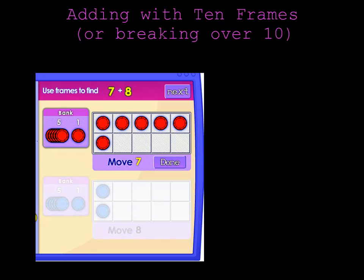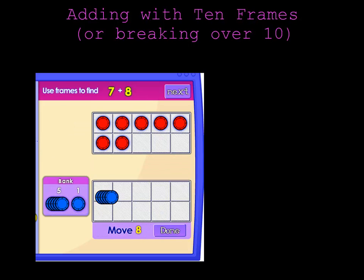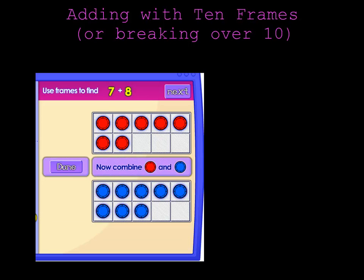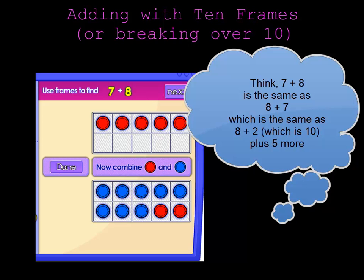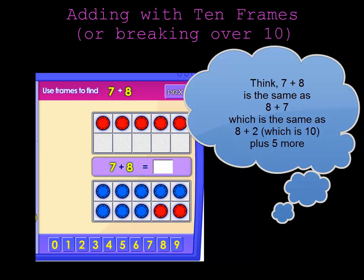Last one. Let's put 7 chips in the top 10 frame and 8 chips in the bottom 10 frame. In order to add them, we're going to complete one of the 10 frames. Let's do that by moving 2 chips down. And that turns 8 plus 7 into 10 plus 5 which is 15.